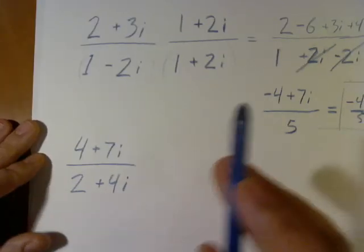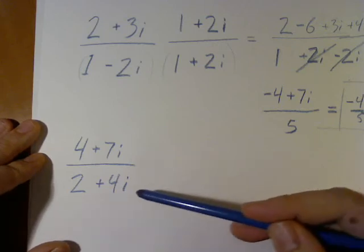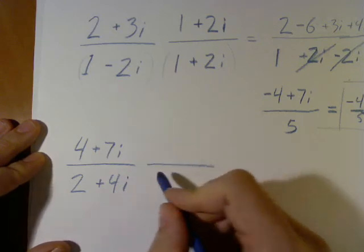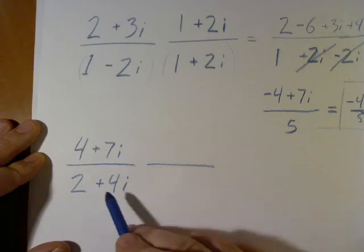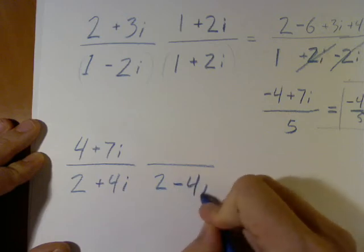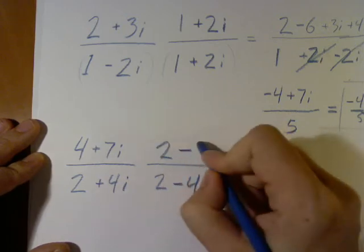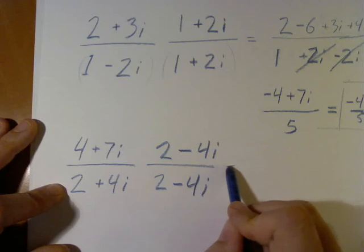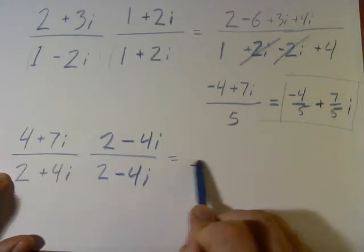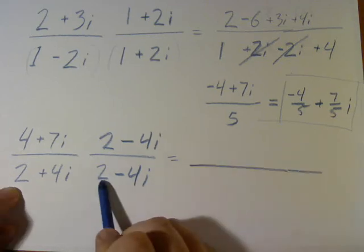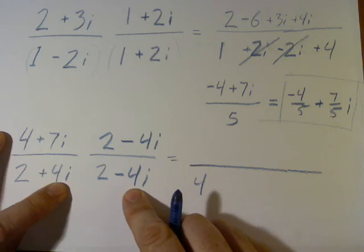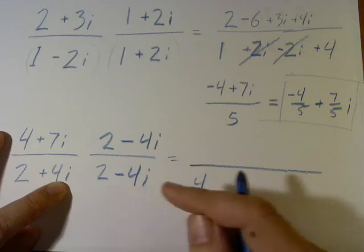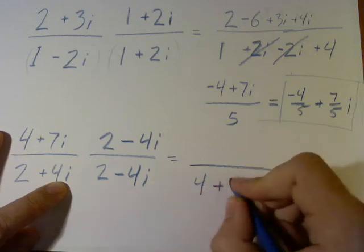Let's do that again, just so we can make sure we understand what we're doing here. We want to multiply times the complex conjugate of the denominator over itself. So I'm going to take that number. Our complex conjugate will be 2 minus 4i. If we multiply out the bottom, we get 2 times 2 gives us 4, 4i times minus 4i is negative 16 times i squared, i squared is negative 1, that becomes positive 16.